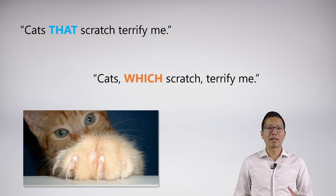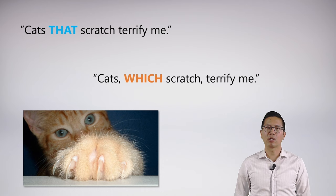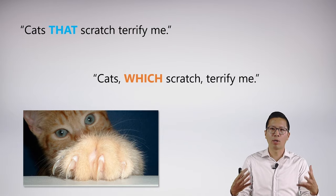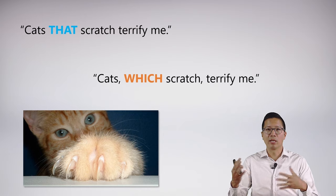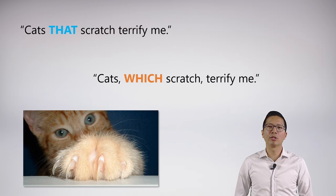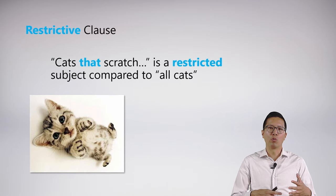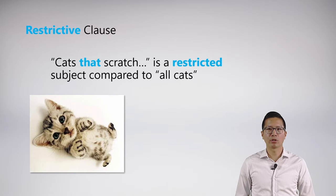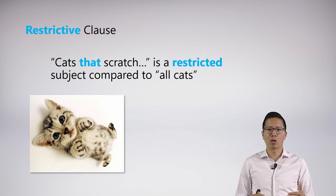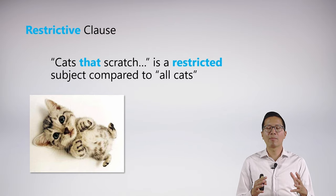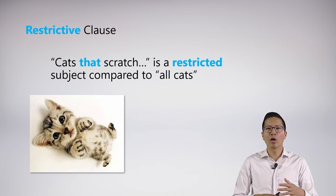Here's another oddity of English that confounds a lot of people. What's the difference between these two statements: 'Cats that scratch terrify me' and 'Cats, which scratch, terrify me'? Notice there's a comma, so I had a natural pause when I read it. But what is the actual meaning difference? It turns out the meaning difference is something called a restrictive clause versus a non-restrictive clause. A restrictive clause is when we use the word 'that' — so in the first example, 'cats that scratch are terrifying' — meaning I'm making a claim about cats that happen to scratch, not about all cats.